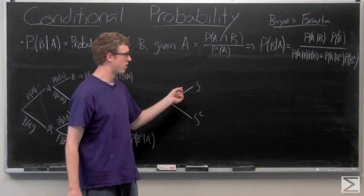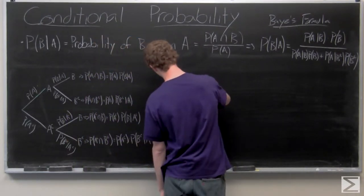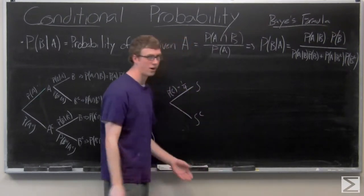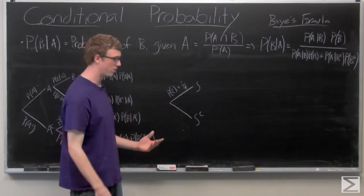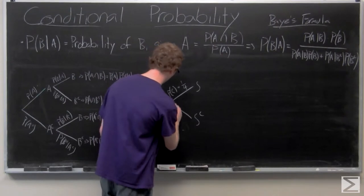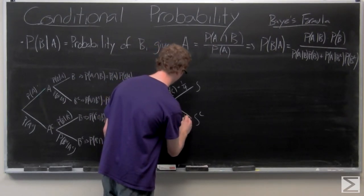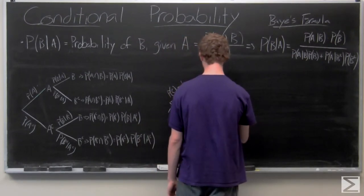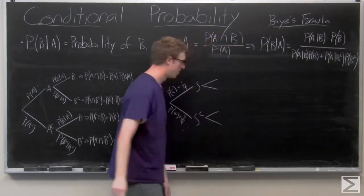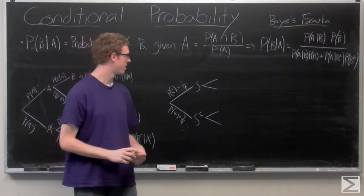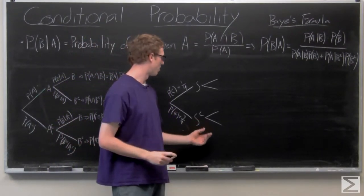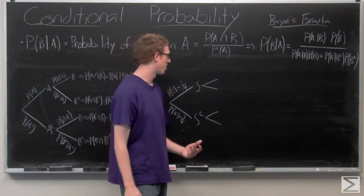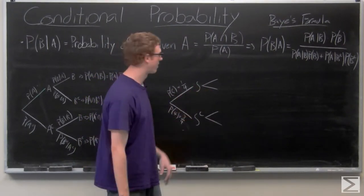So the probability of drawing a spade is one fourth. The probability of not a spade, one minus one fourth or three fourths. Now, we didn't originally state, but the problem states that we're not replacing the cards in the deck. So once we've drawn a card, there are only 51 cards left. So we need to account for that in each of these.